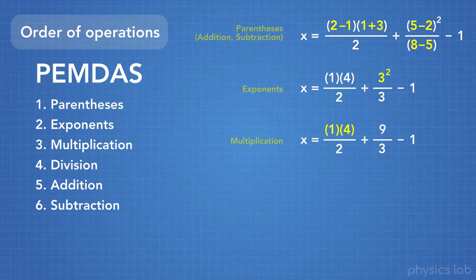Next, we do multiplication. Remember that numbers in parentheses next to each other means multiplication. So here we have 1 times 4, which becomes 4.